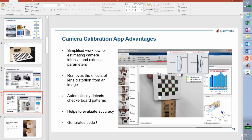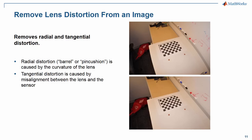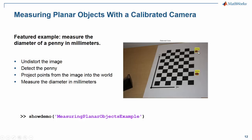For some more information: you can also remove radial distortion and tangential distortion, as seen in this example — in the upper picture the table is a bit curved, but in the lower picture after removing distortion the table appears straight. You can also measure the sizes of objects; for example, identifying the diameter of two pennies is possible as well. For those interested, there's a shipping example called 'measuring planar objects' — just copy and paste that particular show demo line into your MATLAB command window and that example will open up.